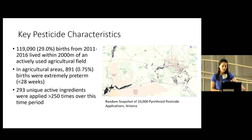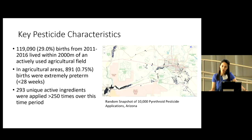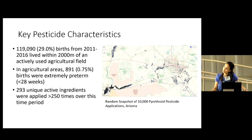About 29% of births from 2011 through 2016 lived within 2,000 meters of an actively used agricultural field. In these areas, 891 births were extremely preterm, and almost 300 unique pesticide active ingredients were applied at least 250 times over this time period. The study areas include Yuma in the bottom left, Maricopa County, Pinal County, and the Colorado River Indian Tribe in the top left.